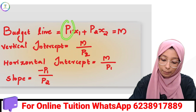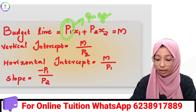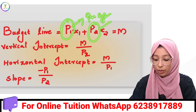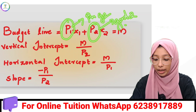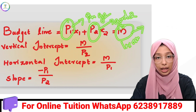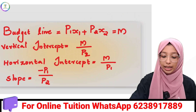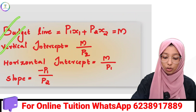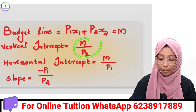Here, p1 is the price of good 1 and p2 is the price of good 2. M is the income.